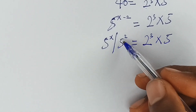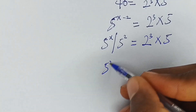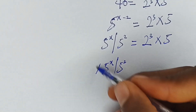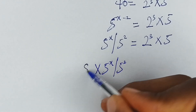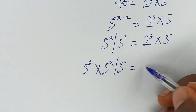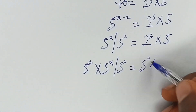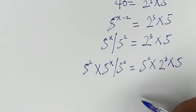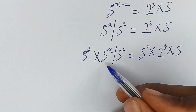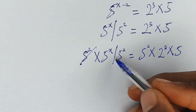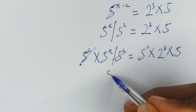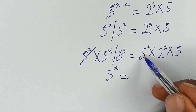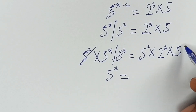Now let's multiply both sides by 5 raised to the power 2. So we have 5 raised to the power x divided by 5 raised to the power 2, multiplied by 5 raised to the power 2, is equal to 5 raised to the power 2 multiplied by 2 raised to the power 3 times 5. From here we can see the 5 raised to the power 2 cancels, so we have 5 raised to the power x equal to, on the other side, 5 raised to the power 2 times 5 raised to the power 1.